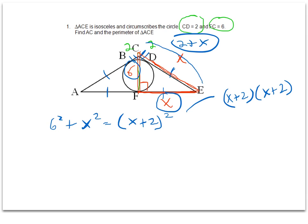And then we're going to simplify. 6 squared is 36 plus X squared. When we FOIL, we get X squared plus 2X plus 2X equals 4.